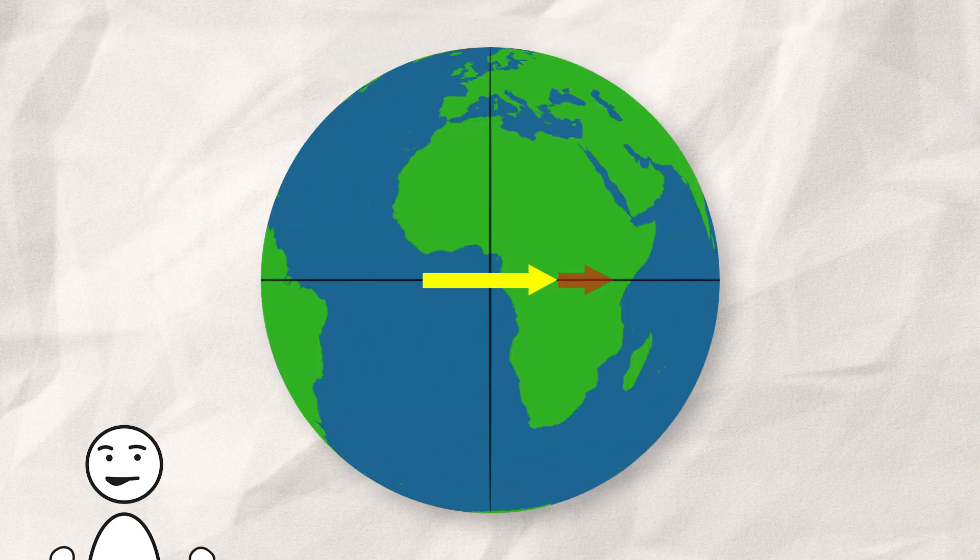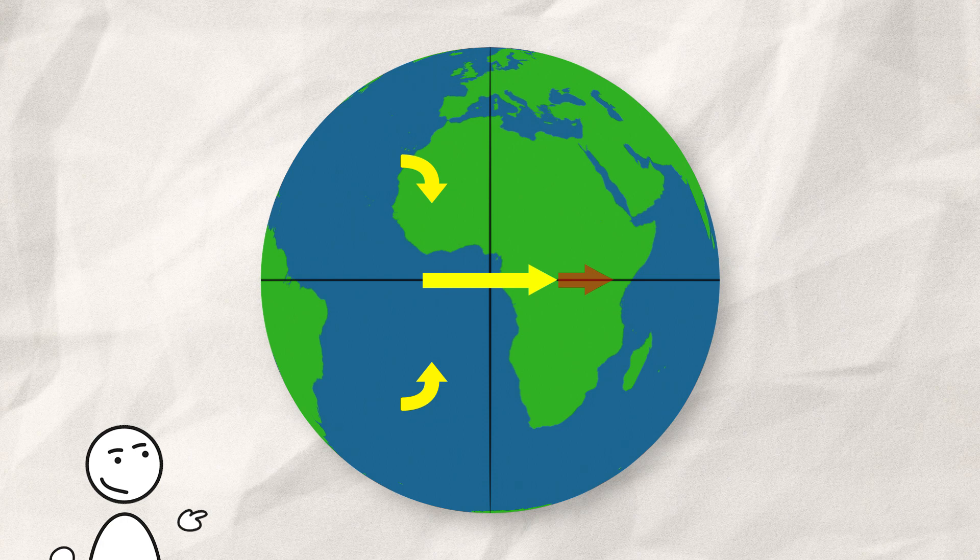So if we move together with the rotation of the Earth, we will increase our total velocity and drift towards the equator. But once we start moving west, we will slow down and move towards the pole.